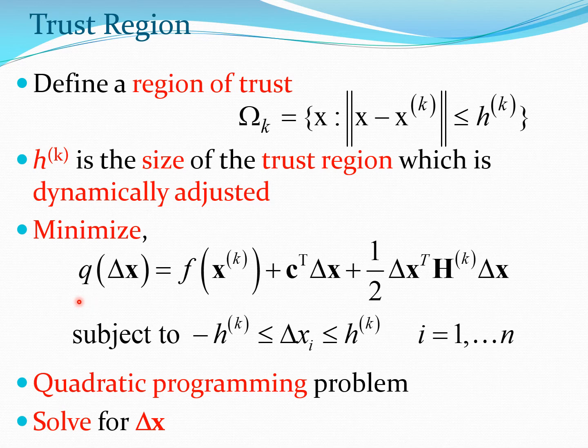So we essentially have this function q of delta x which we can write out like this. So again you have the gradient term, you have the Hessian term as before subject to this particular bound on this movement of delta x. And therefore this is a quadratic programming problem and we have to solve this quadratic problem for delta x as part of the solution process using our trust region method. And now we are going to try to figure out how exactly you determine this trust region for most problems.